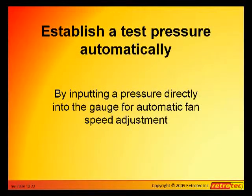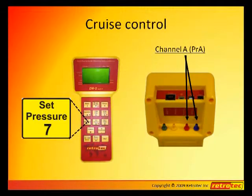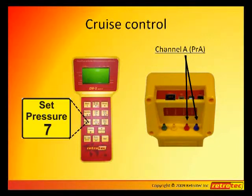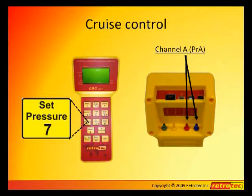Setting a test pressure automatically into the DM2 is very similar to setting cruise control in a car. The only major change is that here we are digitally entering the pressure differential that we wish to achieve. By entering a Set Pressure into the gauge, we have just instructed it to adjust the fan speed automatically until the gauge reads the pressure that we just entered on channel A.